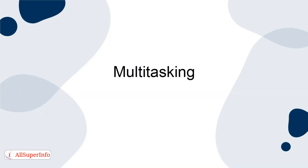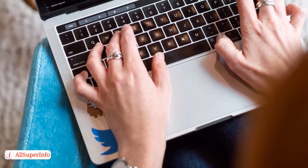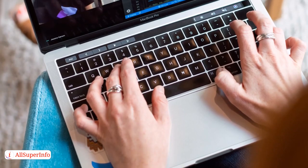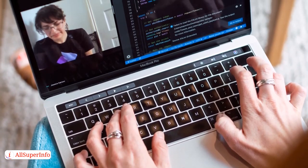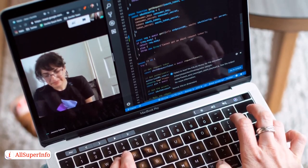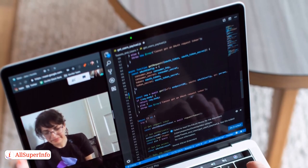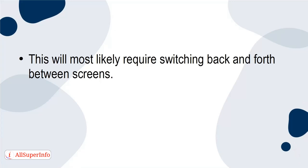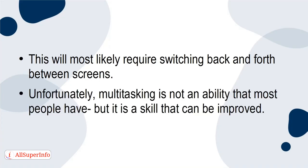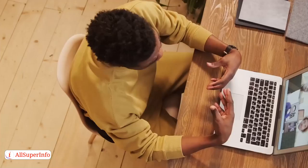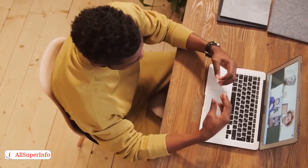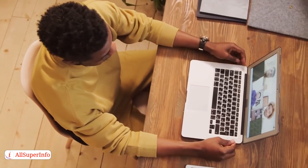Multitasking. In a virtual event, there are a lot of things going on at one time. The presenter is likely to be presenting the information, fielding questions that are coming via chat, engaging with attendees, and more. This will most likely require switching back and forth between screens. Unfortunately, multitasking is not an ability that most people have, but it's a skill that can be improved. However, presenters must understand their limits and plan the event accordingly.